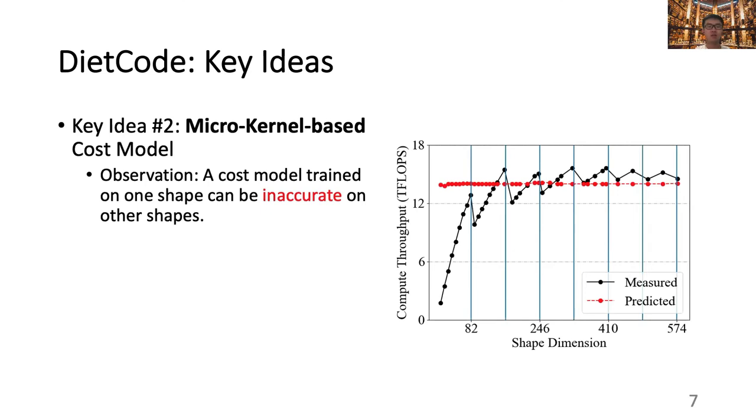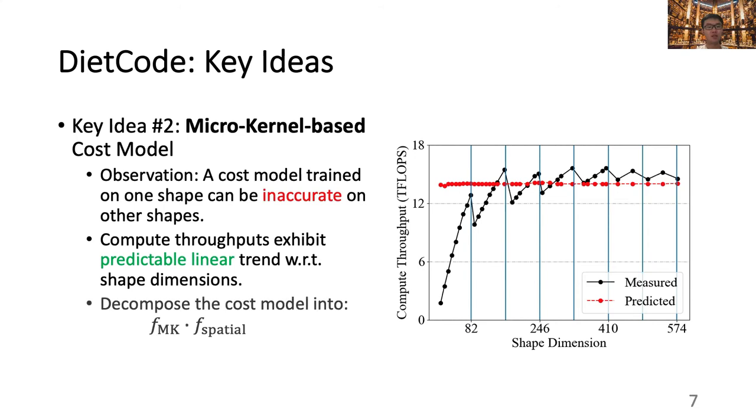Our second key idea, micro-kernel-based cost model, is from the observation that the existing cost model, if trained on one shape, can be inaccurate on other shapes. As we can see from the right-hand side of the slide, as we vary the shape of the workload, the existing cost model is unable to capture the change in compute throughput. We further notice, however, that the compute throughputs exhibit a predictable linear trend with respect to the shape dimensions. This therefore motivates us to build a new cost model that can be decomposed into two components: a trainable micro-kernel cost that is modeled using XGBoost, and an analytical spatial generalization cost that is modeled using a linear function.